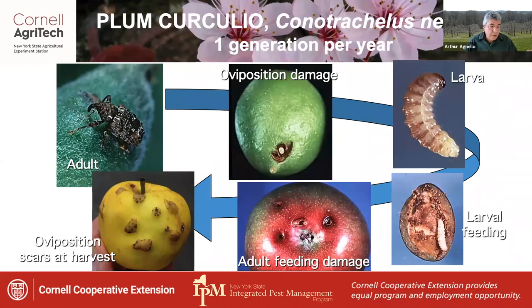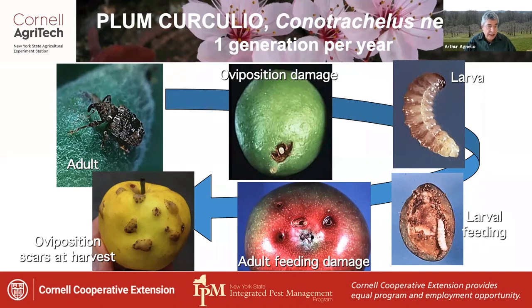Looking at the life cycles of some of the key apple pests in New York, we'll start with plum curculio. This is native to North America and has one generation per year in New York. It attacks all tree fruits, not just plums. The adult overwinters, usually in nearby wooded areas, and emerges at bloom and searches for newly set fruits to oviposit in. The female cuts a slit in the skin with her mouthparts and lays eggs singly just under the surface, as you can see here in this plum.